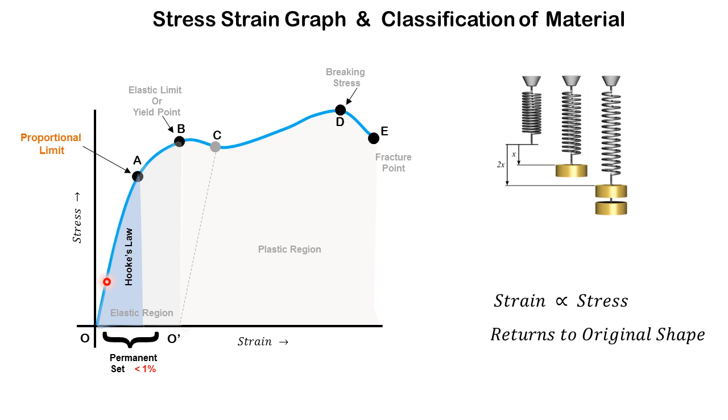In this part of the graph, the material follows Hooke's law and strain is directly proportional to stress, and the material returns to its original shape if the stress is removed.